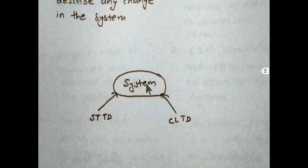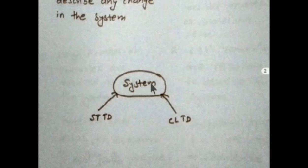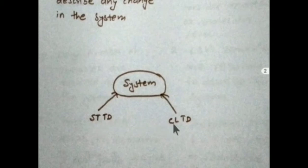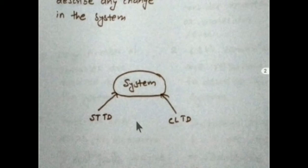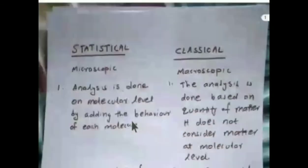Consider a system made up of a large number of molecules. To understand the behavior of a system and the changes that take place in it, we have two approaches: one is the statistical approach and the other is the classical approach. The statistical approach is called the microscopic level approach, and the classical approach is called the macroscopic level approach.